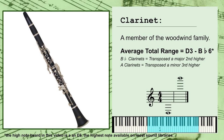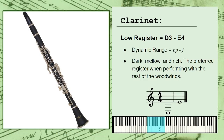The clarinet's range will traditionally be split into four distinct registers. The low register spans from about D3 to E4, with a general dynamic range of pianissimo to forte, or very soft to loud. This register has a dark but mellow tone color, and in general this is where the clarinet will feel most at home when performing alongside the rest of the woodwind section.